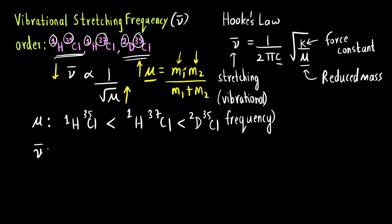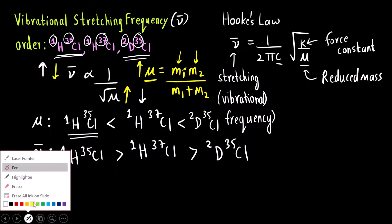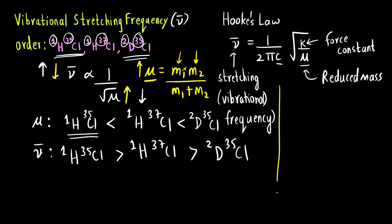And if I want to write down the order of stretching frequency, it will be reverse. The 1H 35 Cl reduced mass is minimum, so the stretching frequency will be maximum. For this stretching frequency will be maximum. Then 1H 37 Cl and then 2D 35 Cl. If I want to calculate the exact values that also I can do.